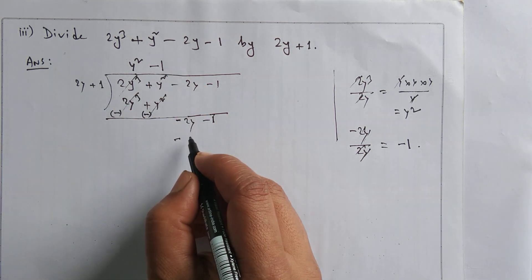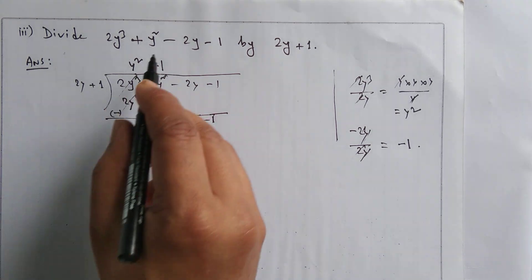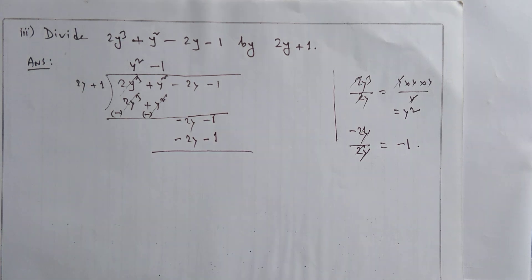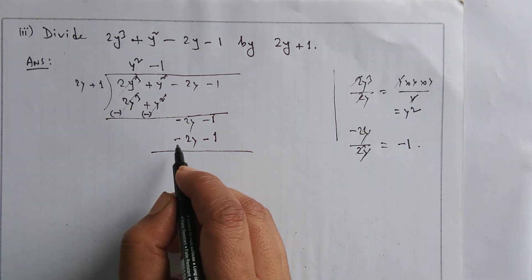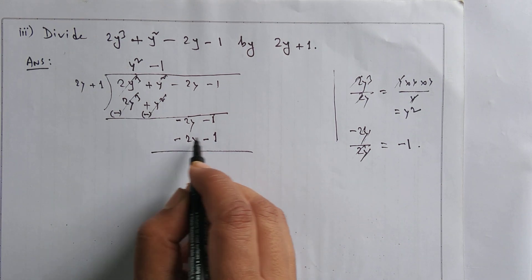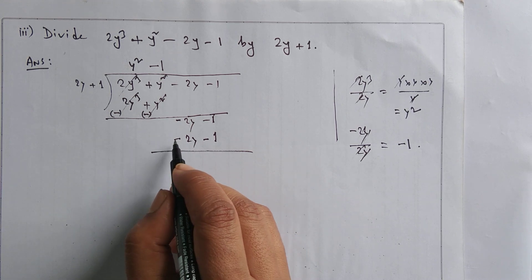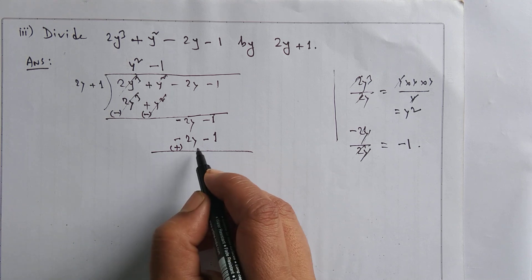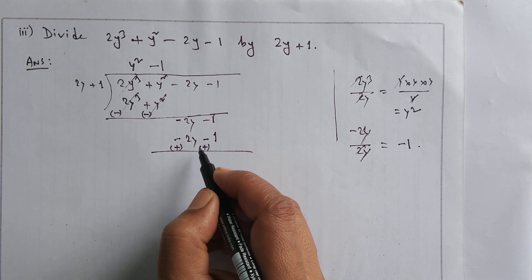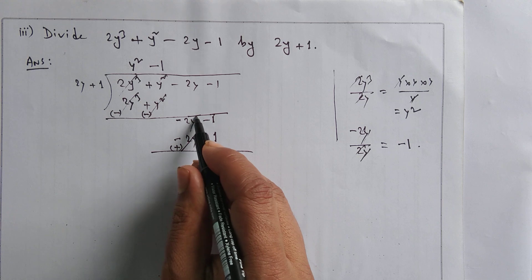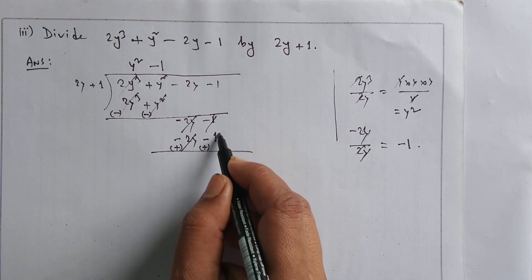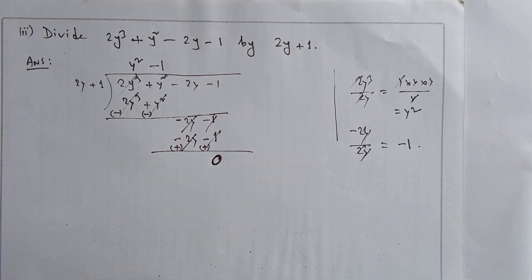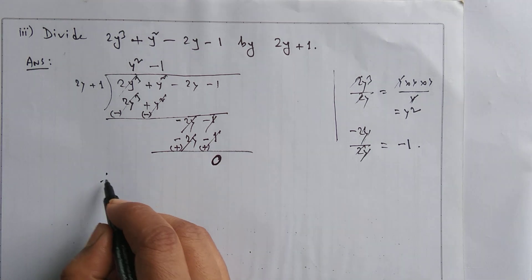So -1 × 2y = -2y, and -1 × 1 = -1. Now we subtract the bottom line: minus of minus becomes plus. So -2y + 2y cancels, and -1 + 1 also cancels. Both terms cancel, and the remainder is zero.